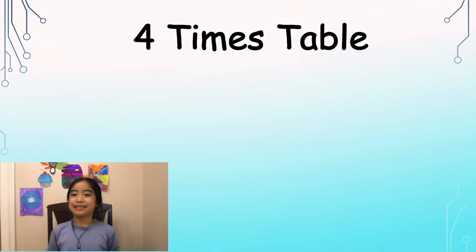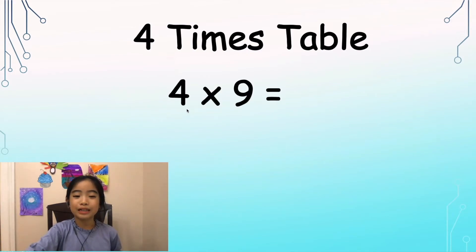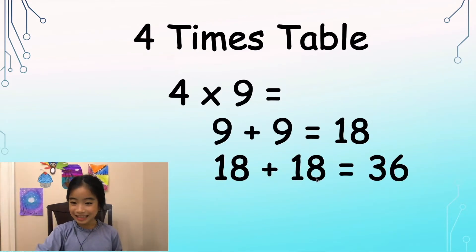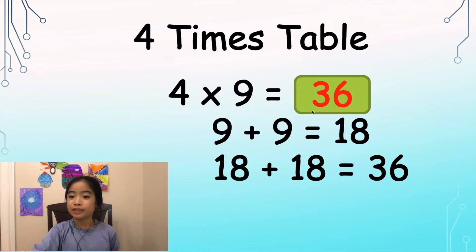Now, let's look at the 4 times table. So the rule is, double it, then double it again. Let's look at my example. It's 4 times 9. First, let's double 9. So 9 plus 9 equals 18. Now, let's double 18. 18 plus 18 equals 36. So 4 times 9 equals 36.